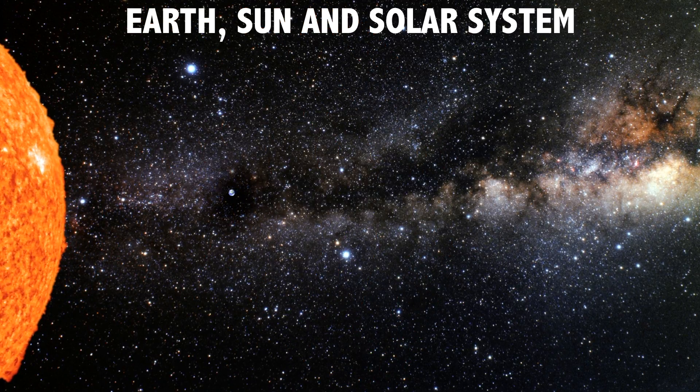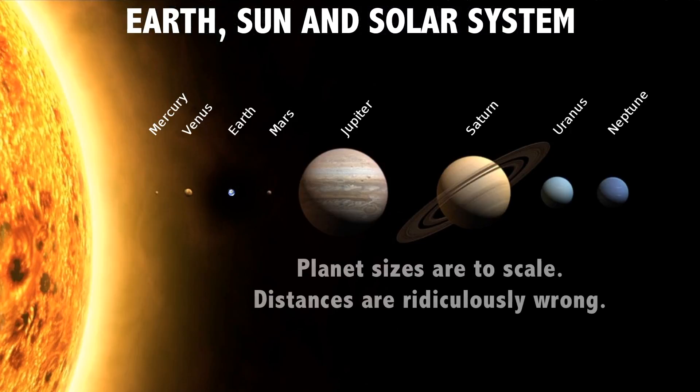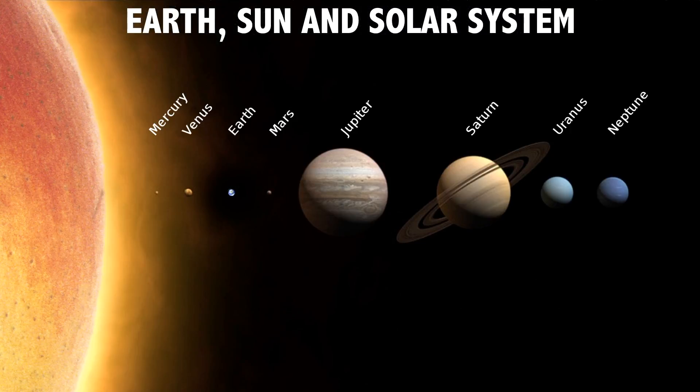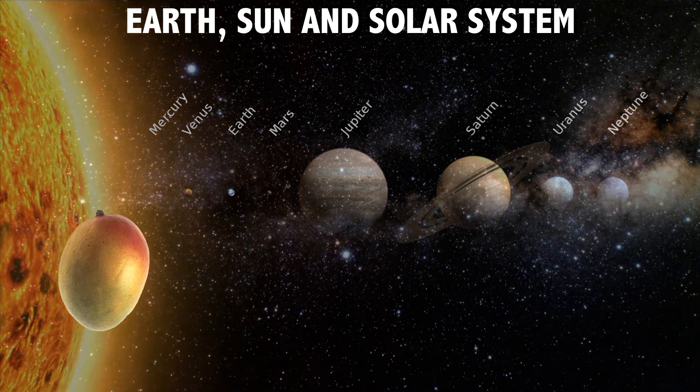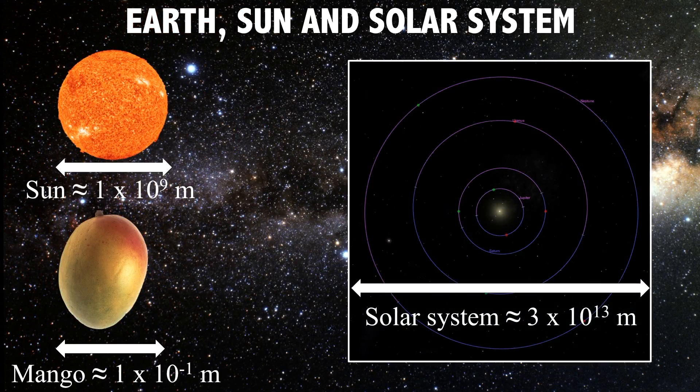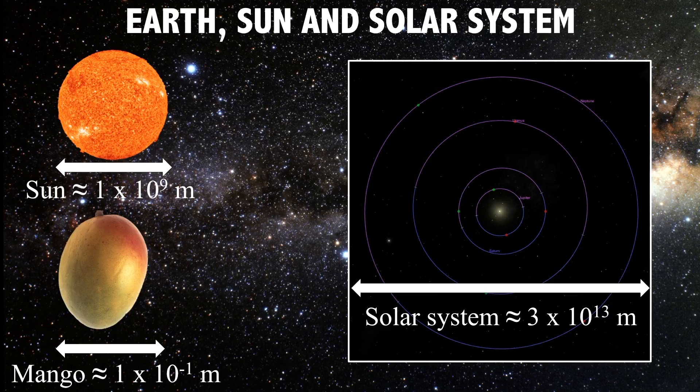The solar system spinning in its gravity is about 10,000 times as wide again. So if the Sun had the magnitude of a mango, then the solar system would be about the size of Spain.